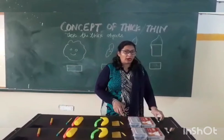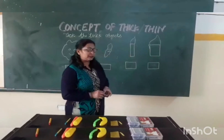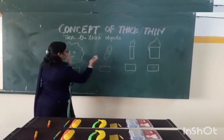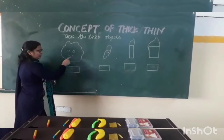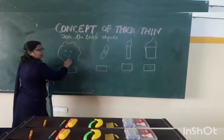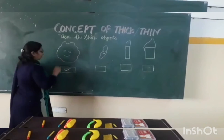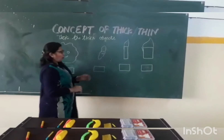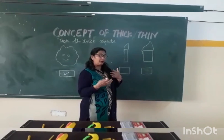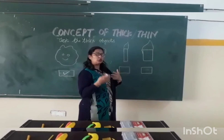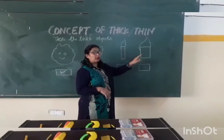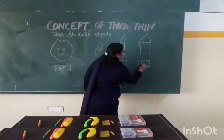Now we are doing an activity on the blackboard. There are two shapes. You tell me which one is thick — this one or this one? Yes, this one is thick. Very good. So we are placing thick here, and now we are placing thick under thin.